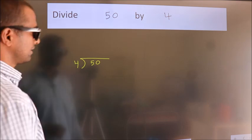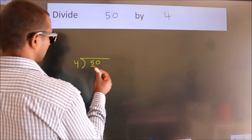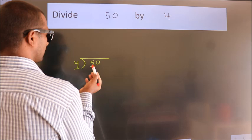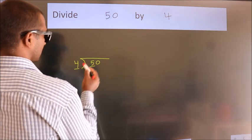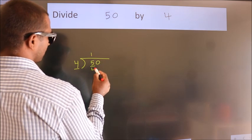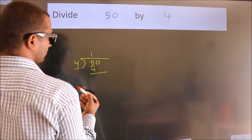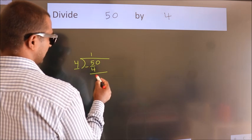Next, here we have 5, here 4. A number close to 5 in the 4 table is 4. Once 4. Now we should subtract. We get 1.